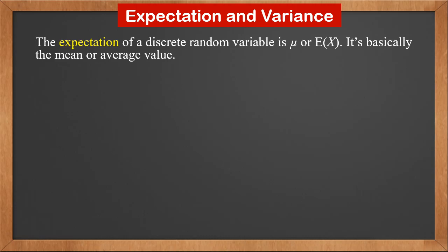The expectation of a discrete random variable is μ or E(X). It's basically the mean or average value. It's calculated by adding the product of each value and its probability.